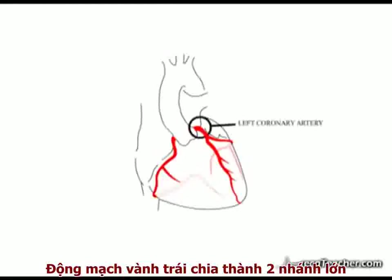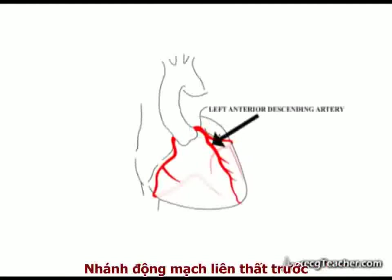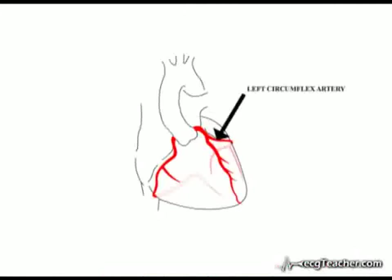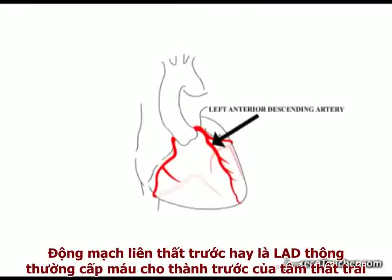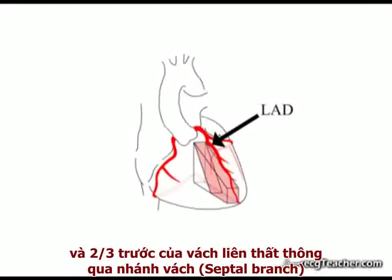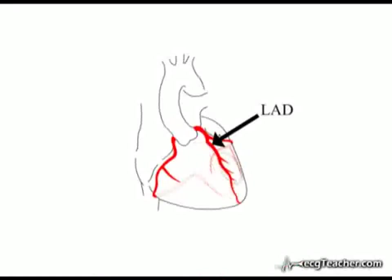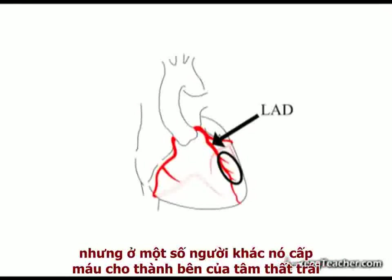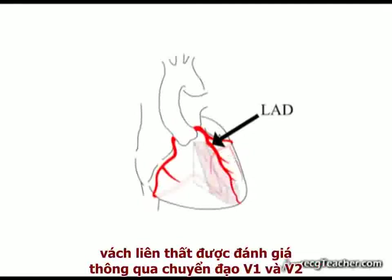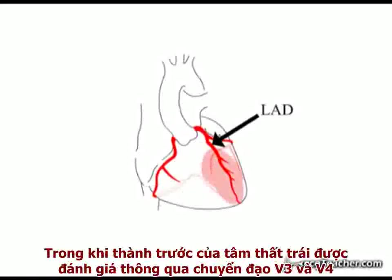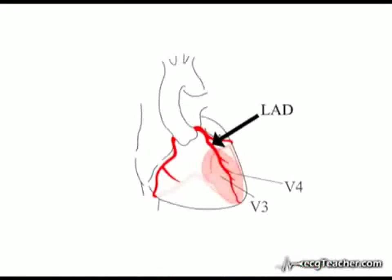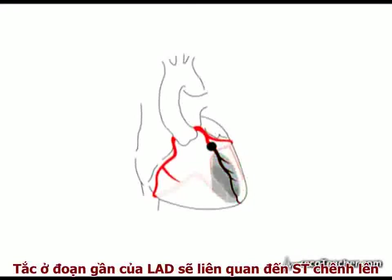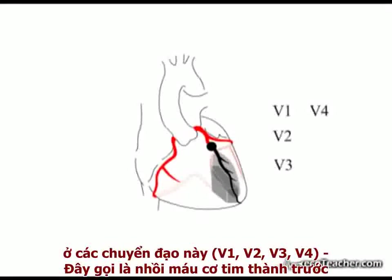The left coronary artery divides into two major branches: the left anterior descending artery and the left circumflex artery. The left anterior descending artery, or LAD, generally supplies the anterior surface of the ventricles and the anterior two-thirds of the interventricular septum through septal branches. Diagonal branches of the LAD supply a variable extent of the anterior and, in some individuals, lateral surface of the left ventricle. The septum is examined by leads V1 and V2, while the anterior surface of the left ventricle is examined by leads V3 and V4. Proximal obstruction of the LAD will be associated with ST elevation in these leads — an anterior MI.